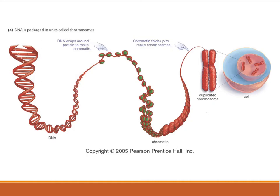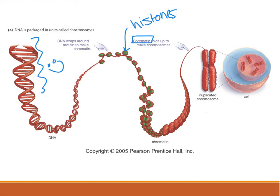We know all about DNA and the base pairs. DNA is wound around histones — these are proteins — to make chromatin. Chromatin then folds up to make chromosomes. So DNA equals chromatin equals chromosomes — they're the same thing at different levels of organization.